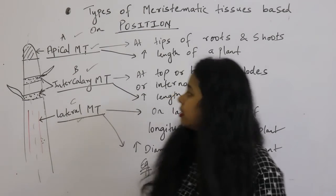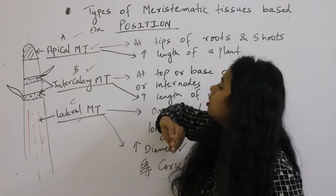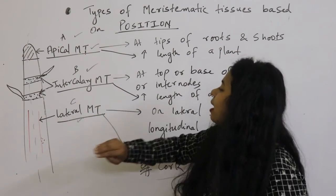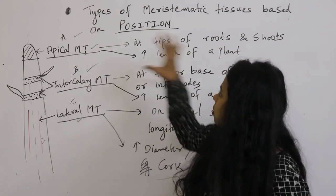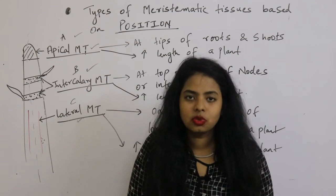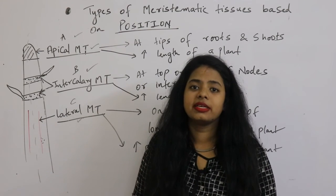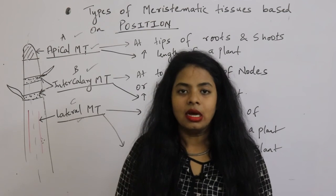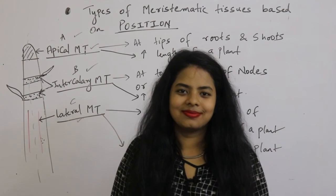So the first type is apical meristematic tissue, second is intercalary, and third is lateral. Based on position, I hope you have understood. For the next video on types based on function, please refer to my channel. Thank you.